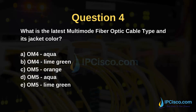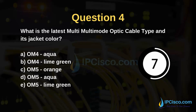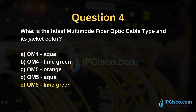What is the latest multi-mode fiber optic cable type and its jacket color? Options: OM4 aqua, OM4 lime green, OM5 orange, OM5 aqua, OM5 lime green. The answer is OM5 and lime green.